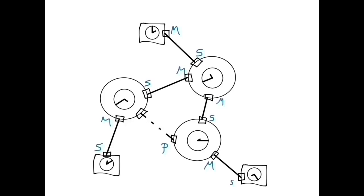The first thing to grasp in order to understand how clock synchronization works in PTP is that clock synchronization actually only occurs between pairs of ports, one of which needs to be in the master state and the other which needs to be in the slave state. In this concrete example, clock synchronization would occur between this pair of ports, this pair of ports, this pair, and so forth.